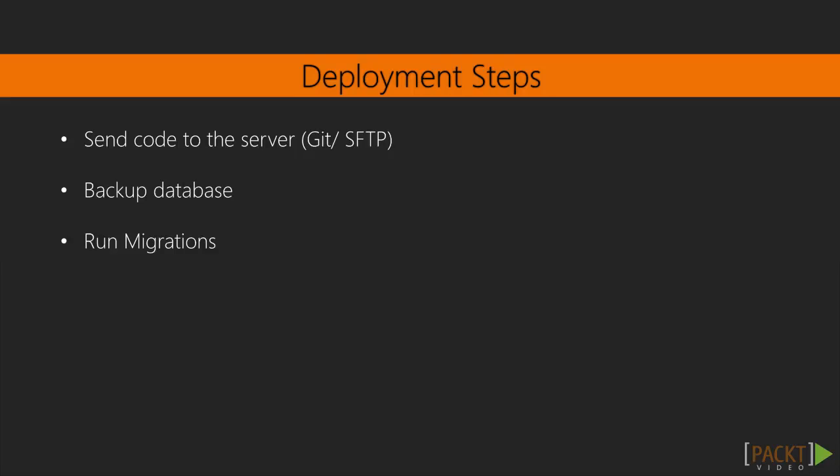The number one thing you need to deal with regarding deployment is the settings.py file. Two common things you'll want to change are the debug values and your database connections. You could simply edit this file, but Django provides a better way.